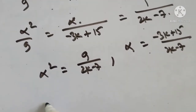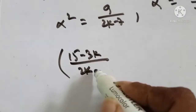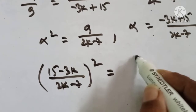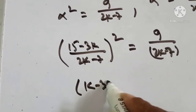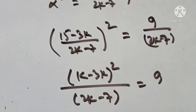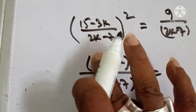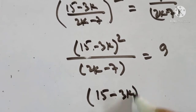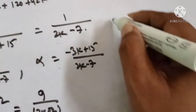Now putting the value of alpha: (15 minus 3k) divided by (2k minus 7), whole squared, equals 9 divided by (2k minus 7). This simplifies to (15 minus 3k) squared divided by (2k minus 7) equals 9. So (15 minus 3k) squared equals 9 times (2k minus 7).